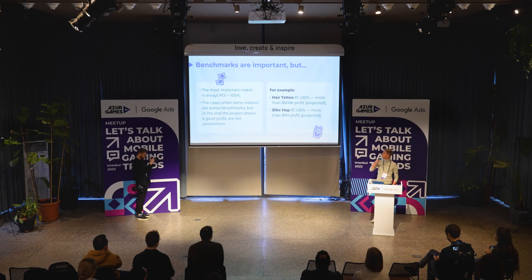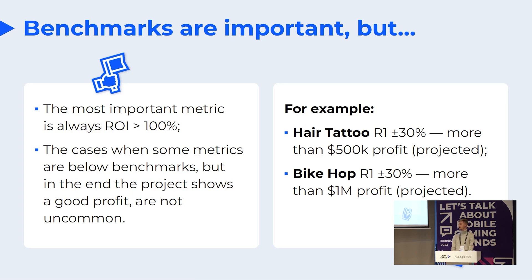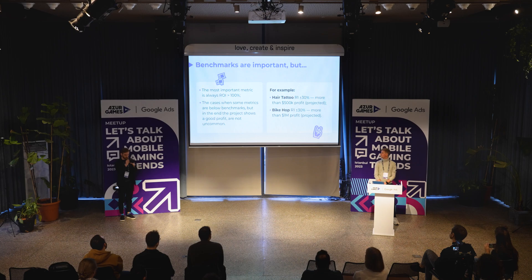There are many benchmarks on the market for these metrics. The bigger your metrics are, the better. But you should remember that your main metric is always ROI. If it's more than 100%, then your project can make profit. This can actually be achieved in many different ways. For example, you can have a pretty low retention rate, but your organic percentage will be very high — that's great for your product. Or you can have low CPI, but your LTV is even higher, and that can also result in good ROI. So cases where some metrics are below benchmarks but the product still shows good profit are not uncommon.